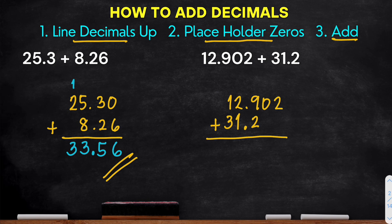And then placeholder zeros. So we can add two zeros here. Okay. Then after that, we can add. So try it. Starting at the rightmost. So we have 2 plus 0, that's 2. 0 plus 0, 0. 9 plus 2, that is 11. So 1 carry 1. And then place our decimal point.